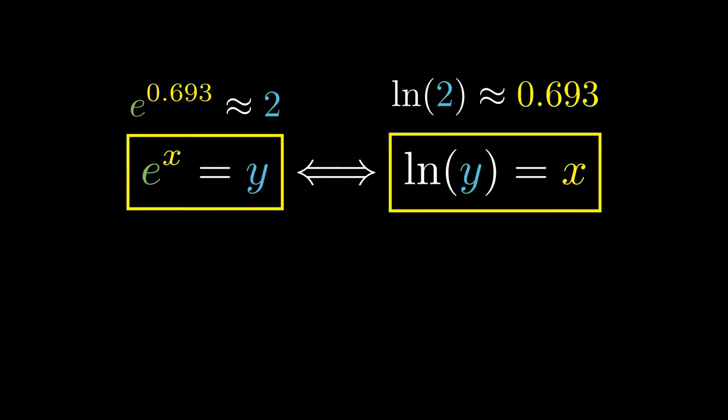Likewise, e raised to the 1.099 approximately equals 3. In this instance, we say that the ln of 3 approximately equals 1.099. Similarly, the ln of 4 approximately equals 1.386, and the ln of 5 approximately equals 1.609.